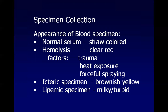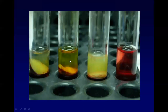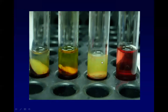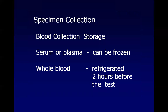Visually, the normal serum shows a straw color. The icteric specimen has a brown-yellow meniscus indicating bilirubin above 430 mmol/L. The lipemic specimen appears turbid and can decrease levels of amylase, urea, and cholesterol, identified by triglycerides above 400 mg/dL. Hemolysis falsely increases levels of blood constituents.